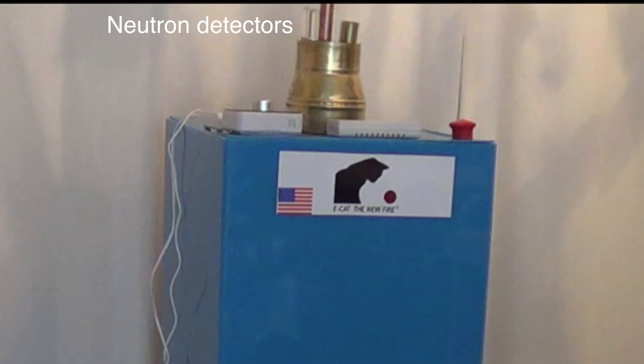They serve to detect that there are no neutrons emitted by the ECAT. And this instrument that you see here is the counter of microsieverts per hour to control and detect that there is no emission of ionizing radiations, so that the running of the ECAT is perfectly safe.